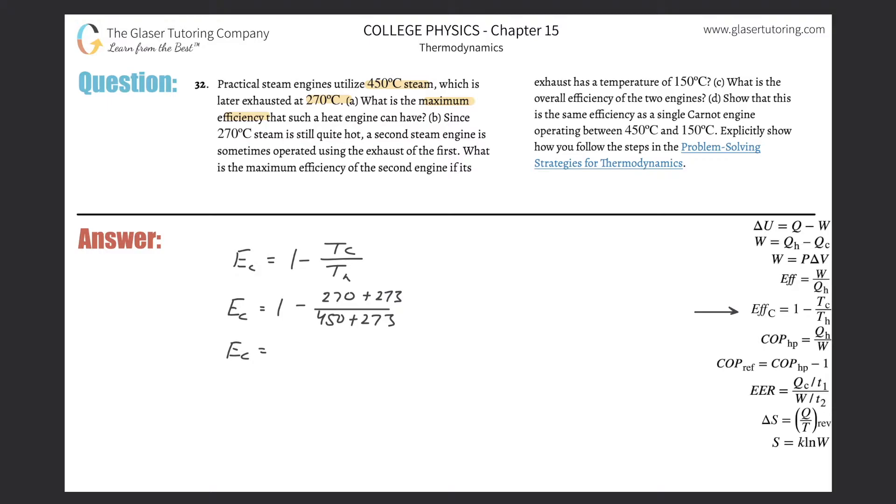All right. And let's do the math. So this is now 1 minus, double parentheses, 270 plus 273, divided then by 450 plus the 273. And this is about, all right, we get a value of about 0.249 or so. So about 24.9, aka 25%. All right. So that would be the maximum efficiency.